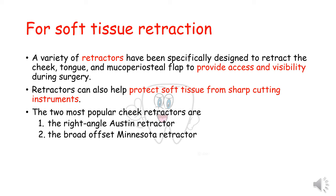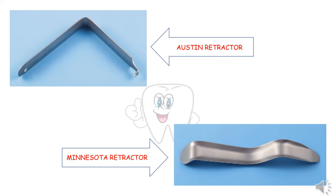For soft tissue retraction, a variety of retractors have been specifically designed to retract the cheek, tongue, and the mucoperiosteal flap to provide access and visibility during the surgery. Retractors can also help protect the soft tissue from sharp cutting instruments. The two most popular cheek retractors are the right angle Austin retractor and the broad offset Minnesota retractor. The first picture shows the right angle Austin retractor and the second picture shows the broad offset Minnesota retractor.